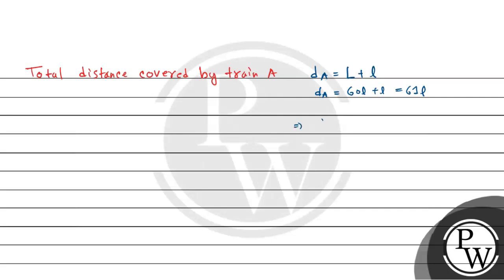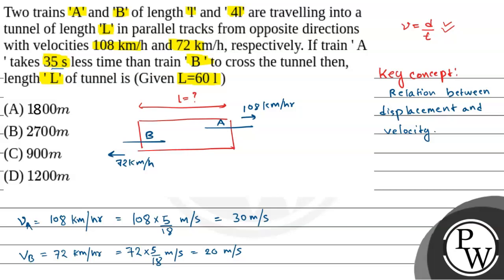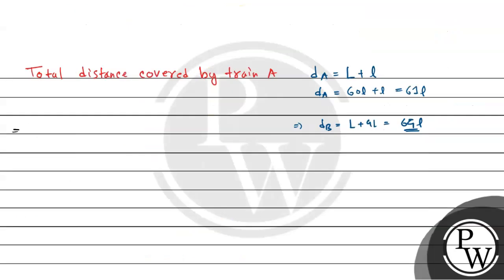Similarly, the distance covered by train B to cross the tunnel equals the length of the tunnel plus its own length, which is 4L. So D_B equals 60L plus 4L, which equals 64L. The question states that train A takes 35 seconds less time than train B, so: time taken by train B minus time taken by train A equals 35 seconds.